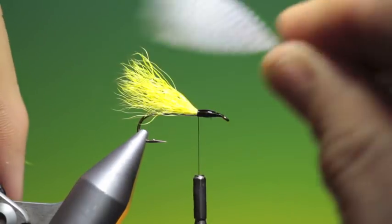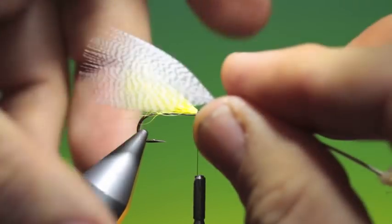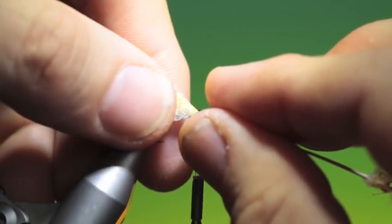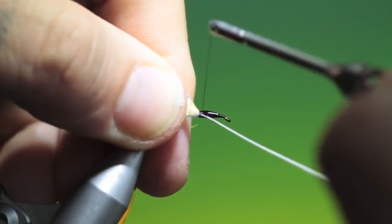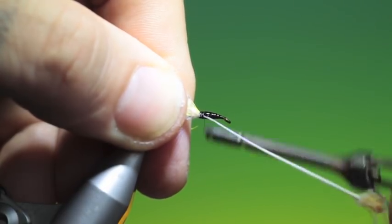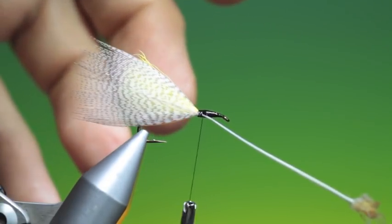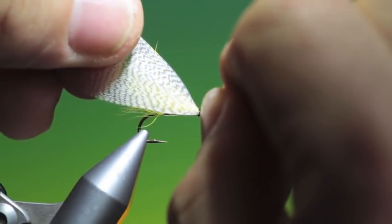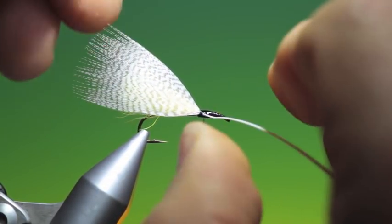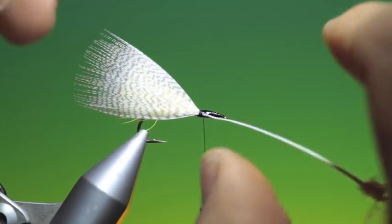Then we need two mallard feathers. These want to be tied in. These are mallard flank. That's good.